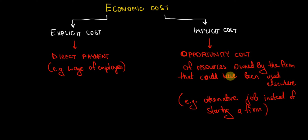Another example: if we as a firm have a building and we want to use it to produce our products, the implicit cost of having that building would be the opportunity cost of owning it. That building could be rented out and generate income. So the implicit cost is the income that we're giving up from the rent of the building in exchange for using it as a production facility.